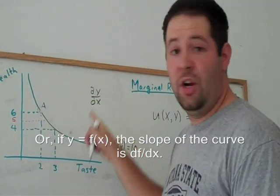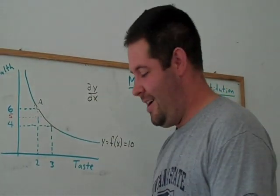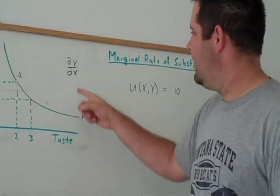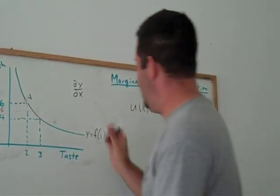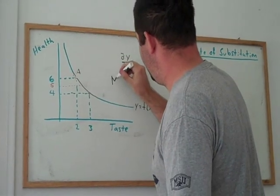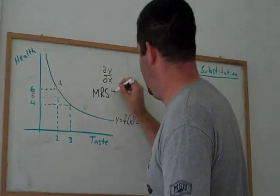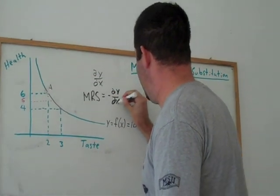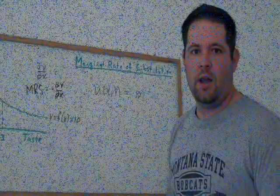And so whenever we see a term in taking the derivative here, we'll have dy/dx, that will be our slope. And so we know the marginal rate of substitution, because it is the negative of the slope, is the negative of dy/dx.